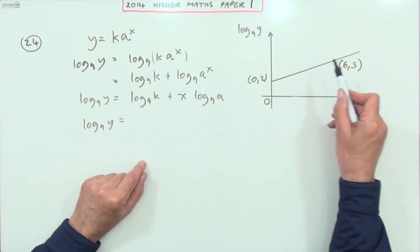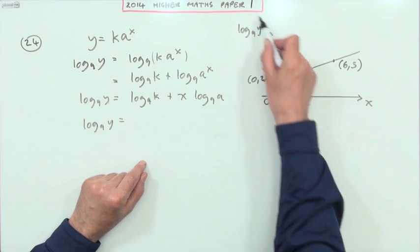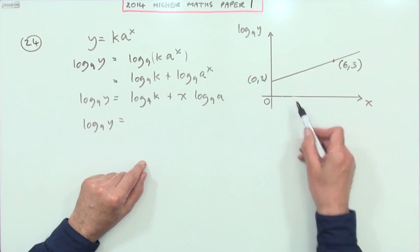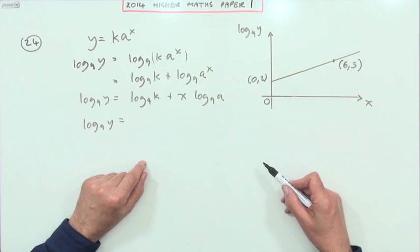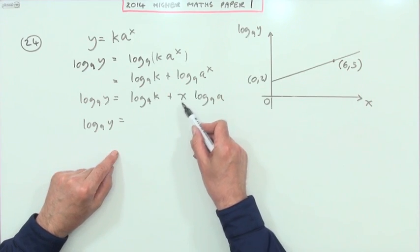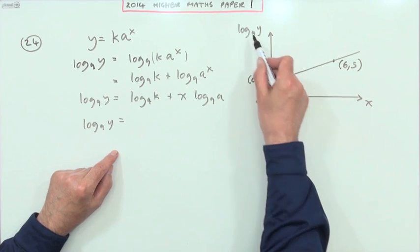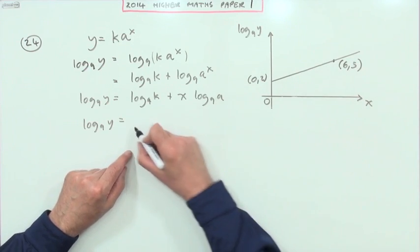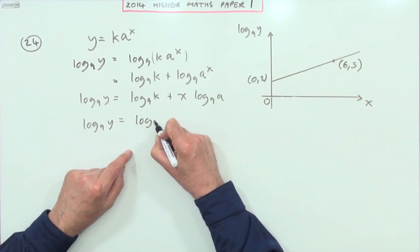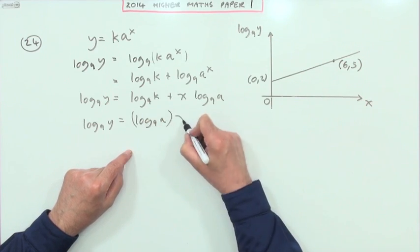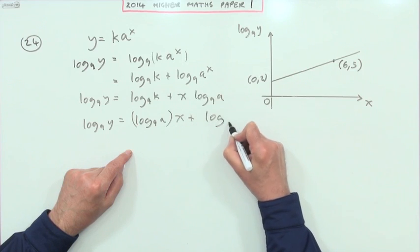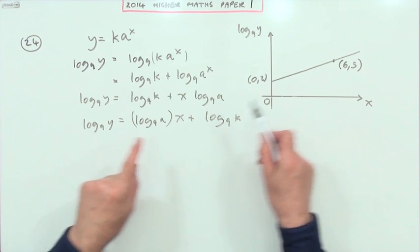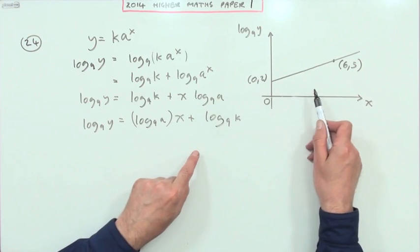Because if that's the equation of a line, it would be in the form of y equals mx plus c, only the y would be whatever the vertical axis has and the x would be whatever the horizontal axis has. So I wanted to say something like log 9 y equals something x plus something. So I will write it as log base 9 of a times x plus log base 9 of k.